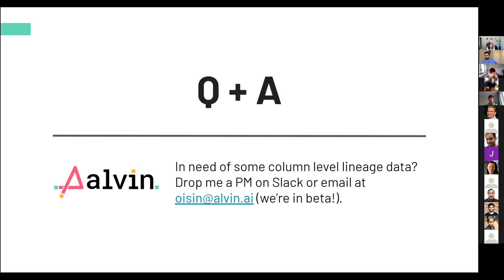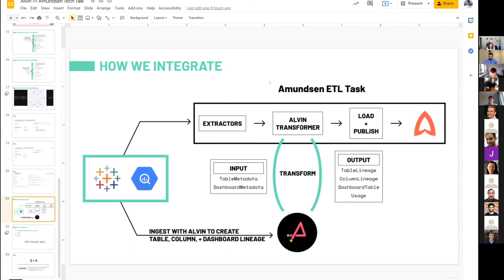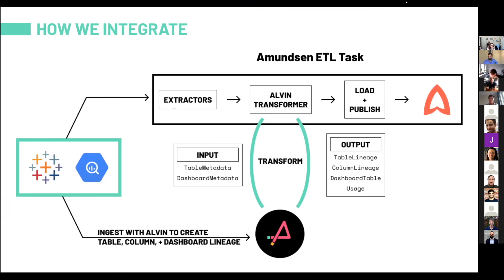Thanks for the great presentation. Just to confirm — it sounds like you had the lineage information present in a different system, and you were able to leverage that in the transformer to attach it to the data coming from the extractor. Is that correct? Yes, exactly. Basically, there are two parallel processes happening. We ingest the data into Alvin, and then we can access that in the Amundsen ETL job. In our use case we don't have that lineage information anywhere except probably Confluence, so I was just thinking about how that would apply. Thank you.